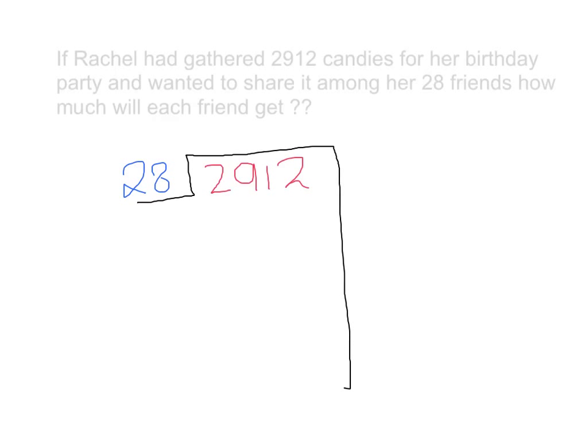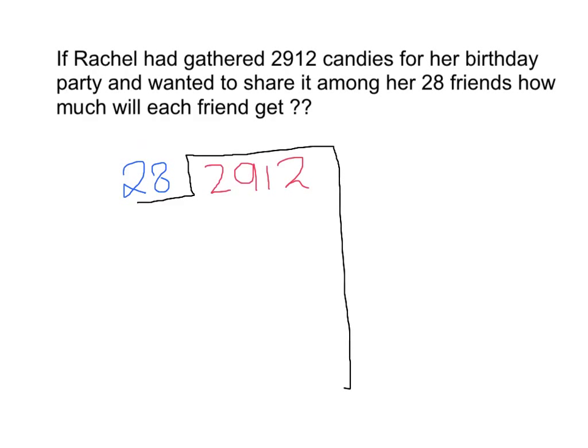First I think: 28 into 10 is equal to 280, so 28 into 100 will be 2,800.